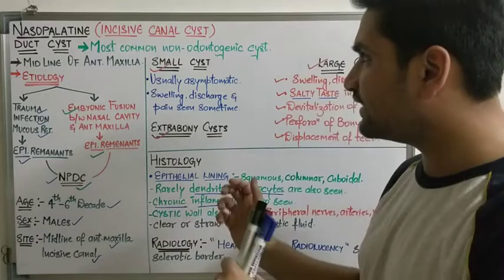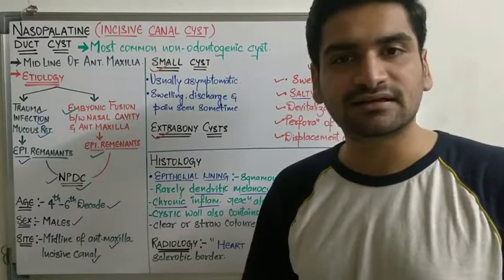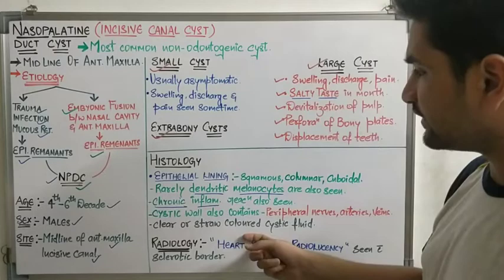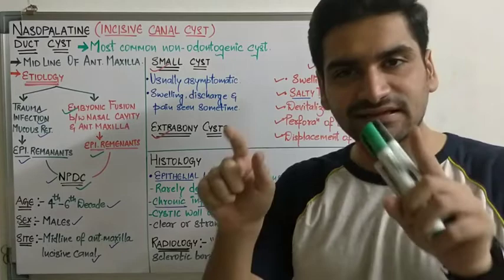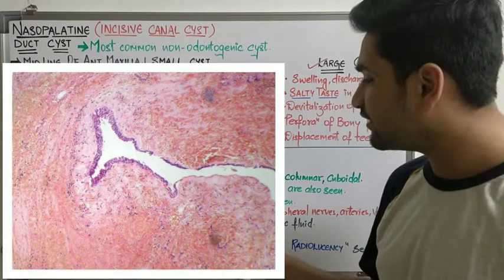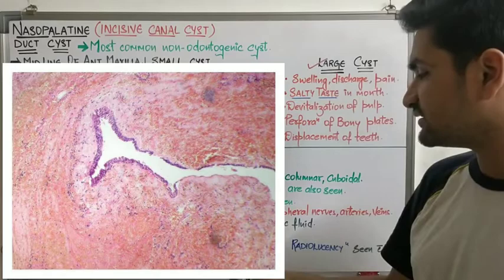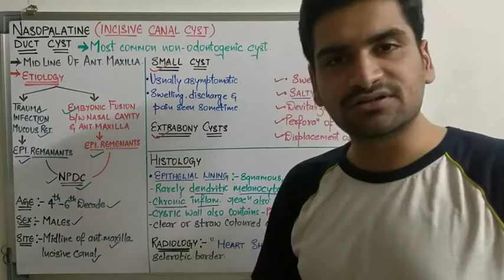You cannot directly diagnose nasopalatine duct cyst based on location alone, as there are various other midline cysts. To summarize histology: the epithelial lining has squamous, columnar, or cuboidal cells; the cystic wall has dendritic melanocytes, chronic inflammation, and peripheral arteries and veins; and the cystic cavity has clear or straw-colored fluid.